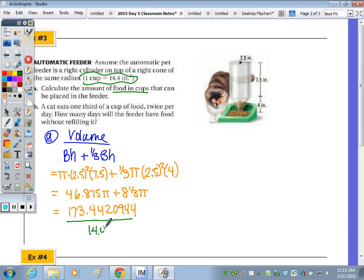That's the volume of the composite solid. And to find out how much food in cups, it tells us that one cup takes up approximately 14.4 cubic inches. So I want to divide the total volume by 14.4, and we get 12.04458989. So that's about 12 cups.